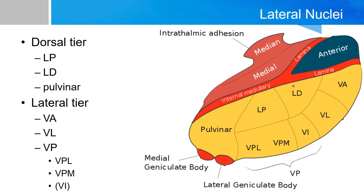The lateral nuclei can be further subdivided into two tiers: a dorsal tier and a ventral tier. The dorsal tier has three nuclei: lateral dorsal, lateral posterior, and the pulvinar. The ventral tier also has three big groups of nuclei: ventral anterior, ventral lateral, and ventral posterior. The ventral posterior is further divided into ventral posterior lateral and ventral posterior medial. The ventral intermediate is not particularly important.